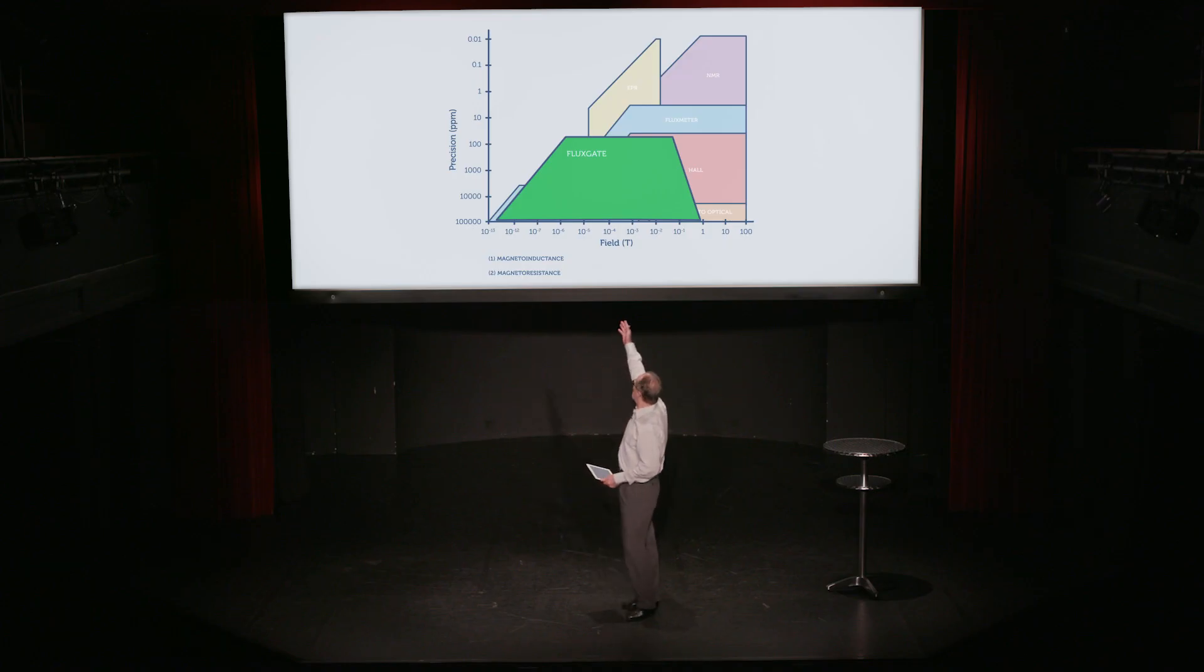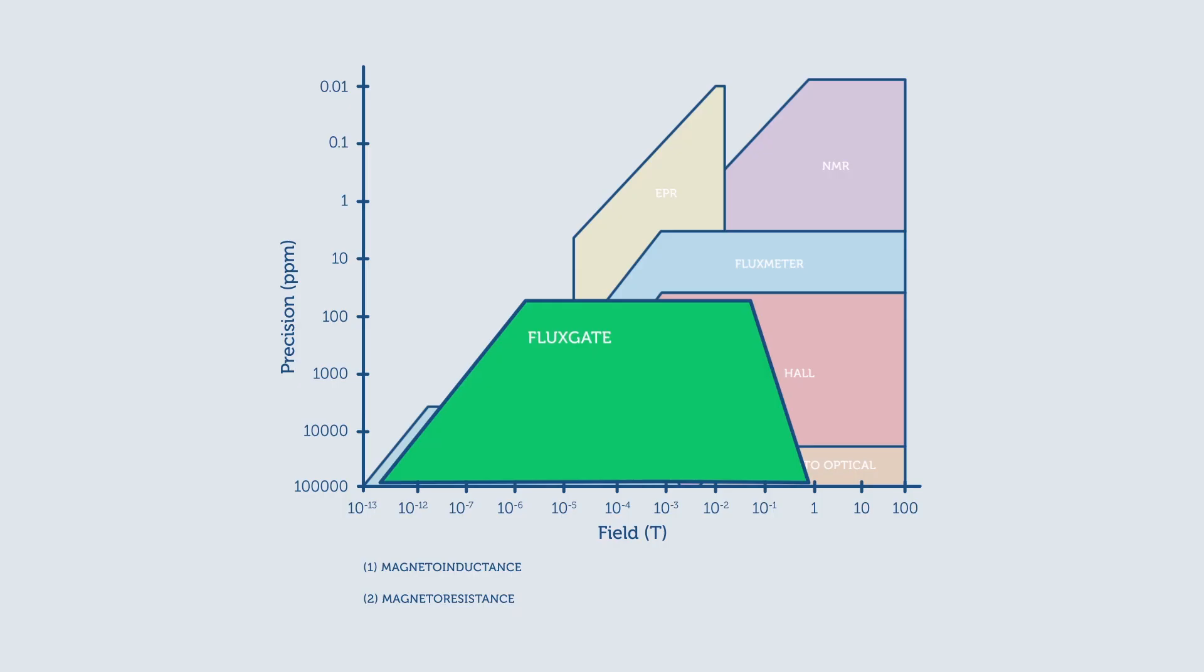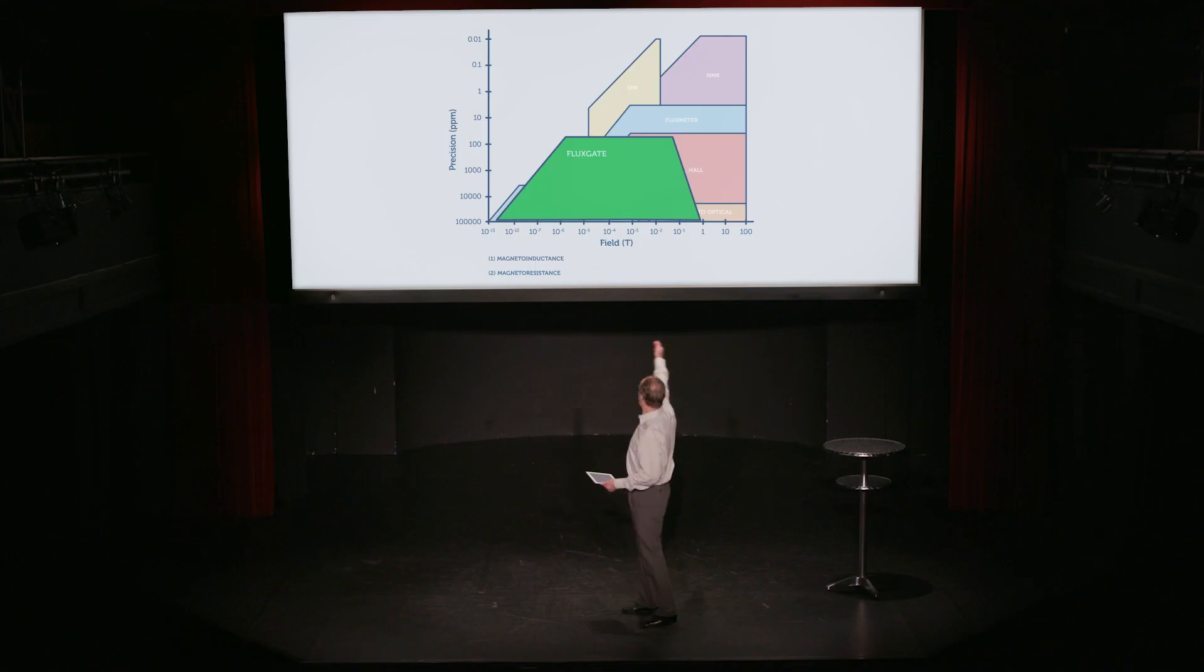As we can see from this classification of all the different types of magnetic field measurement techniques, where we classify them by the range of magnetic field strengths on the bottom and the precision on the vertical axis, we can see that flux gates are really focused on low field measurements.